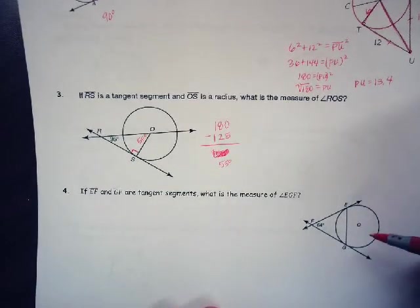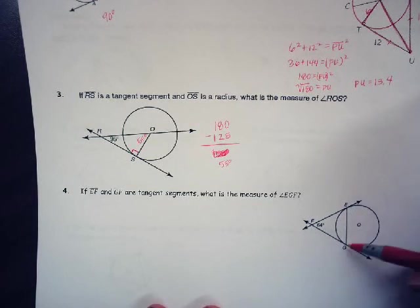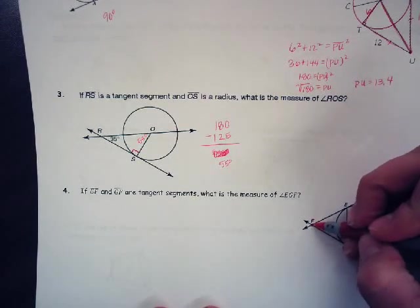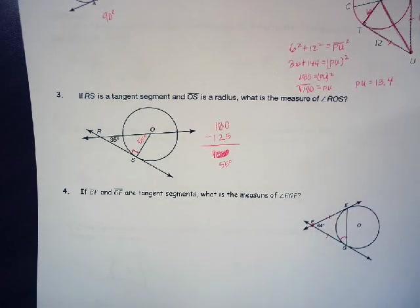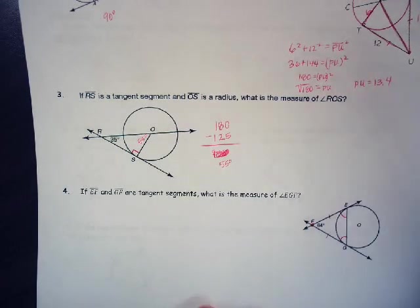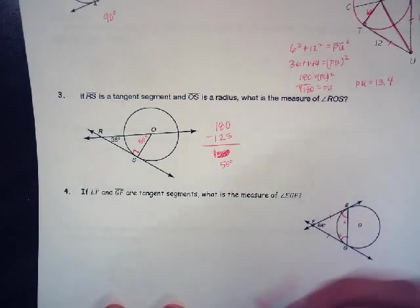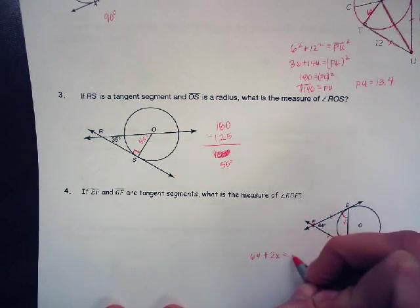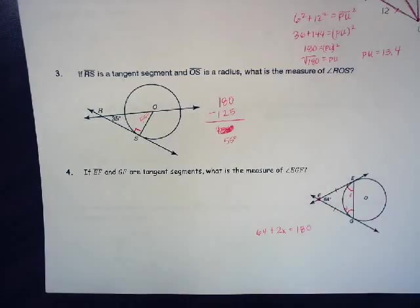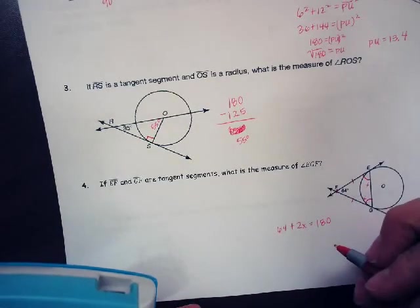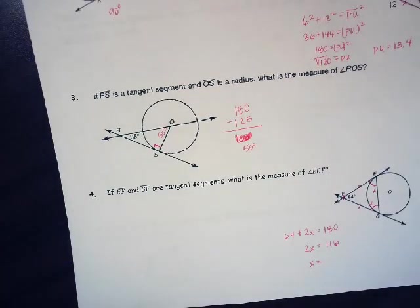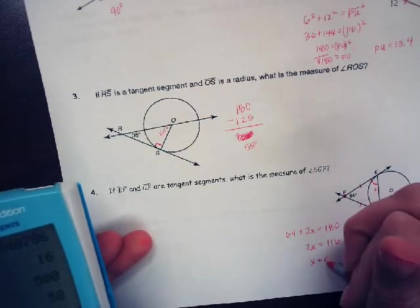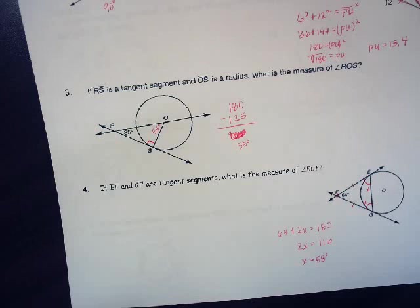If EF and GF are tangent segments, what is the measure of angle EGF? So I'm looking for this angle. Well, these two tangent segments meet at an exterior point right here, which means that this length is congruent to this length. And if we remember, this makes an isosceles triangle, which means that this angle and this angle are the same. So I can call them X. So I have 64 plus 2X equals 180. If I take 180 minus 64, I get 116. And then I divide by 2 on both sides, and I get 58. So the measure of those two angles are 58.